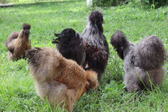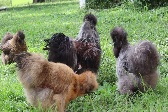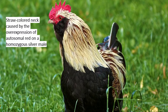There is one other thing I'd like to mention before going onto the Punnett squares, and that is autosomal red. Although there have been some proposed ideas, we aren't entirely sure how autosomal red works. We know that it is inherited, and with a lot of time and patience, it can be bred out. However, it is not affected by the silver and gold alleles. The reason I mention this is because if you ever see red on a silver bird, like what you see in salmon faverolles, or perhaps a straw colored neck on a homozygous silver bird, that is probably because of autosomal red.